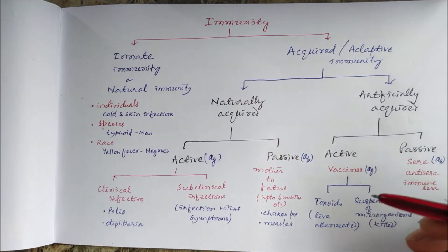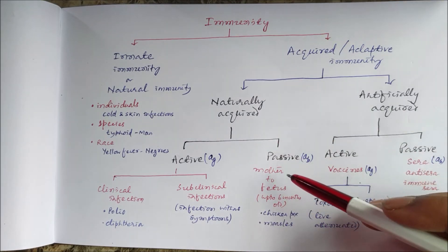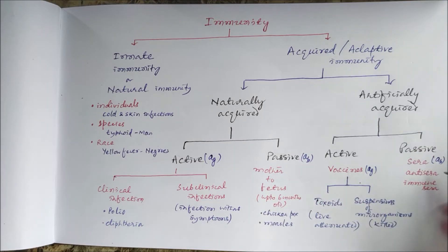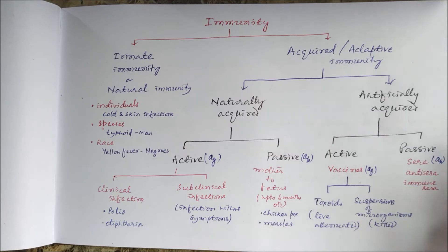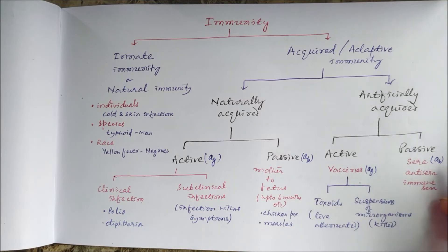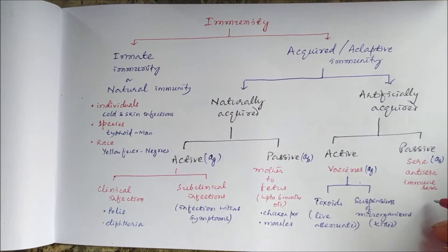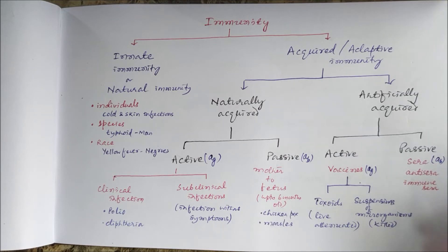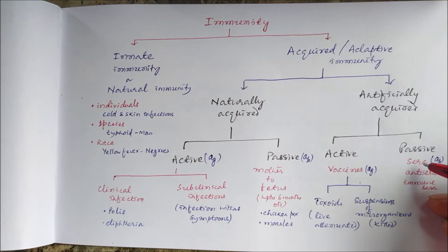If you directly introduce antibodies — either naturally from mother to fetus, or in the form of sera — it is called passive immunity. So vaccines are forms of antigen and sera are forms of antibody. Sera are also known as anti-sera or immune sera — we can call them anti-sera because they are used against certain antigens.